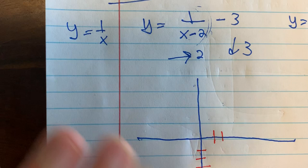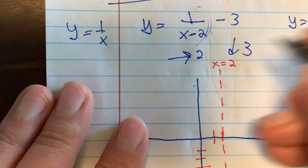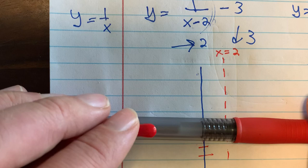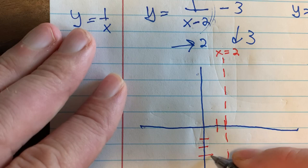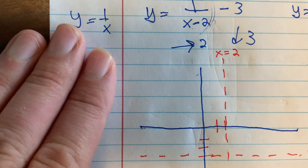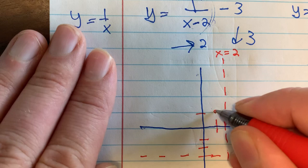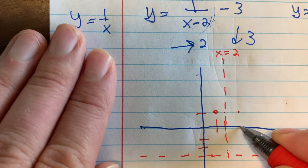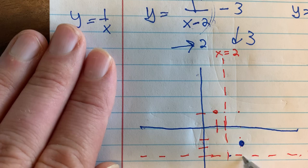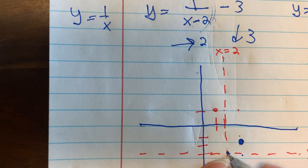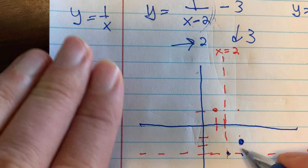The horizontal asymptote was at y equals 0. Shifting right by 2 does nothing to a horizontal line, but shifting down by 3 gives us a new horizontal asymptote at y equals negative 3. The parent function's point (1,1) shifts 2 to the right and 3 down. It's still 1 over and 1 up from where the asymptotes intersect, so you can think of that intersection as the new origin.